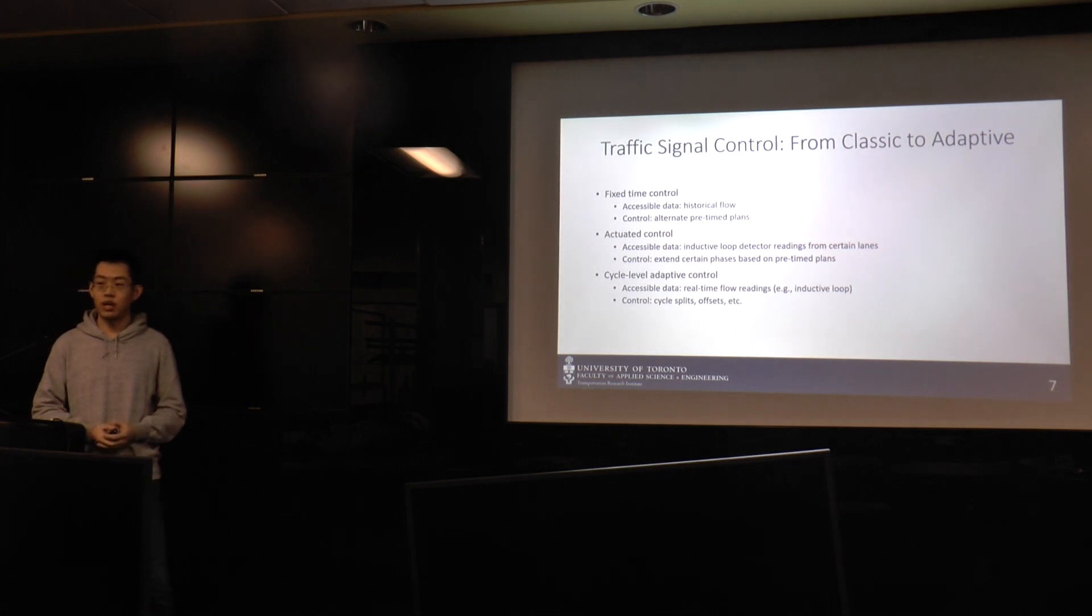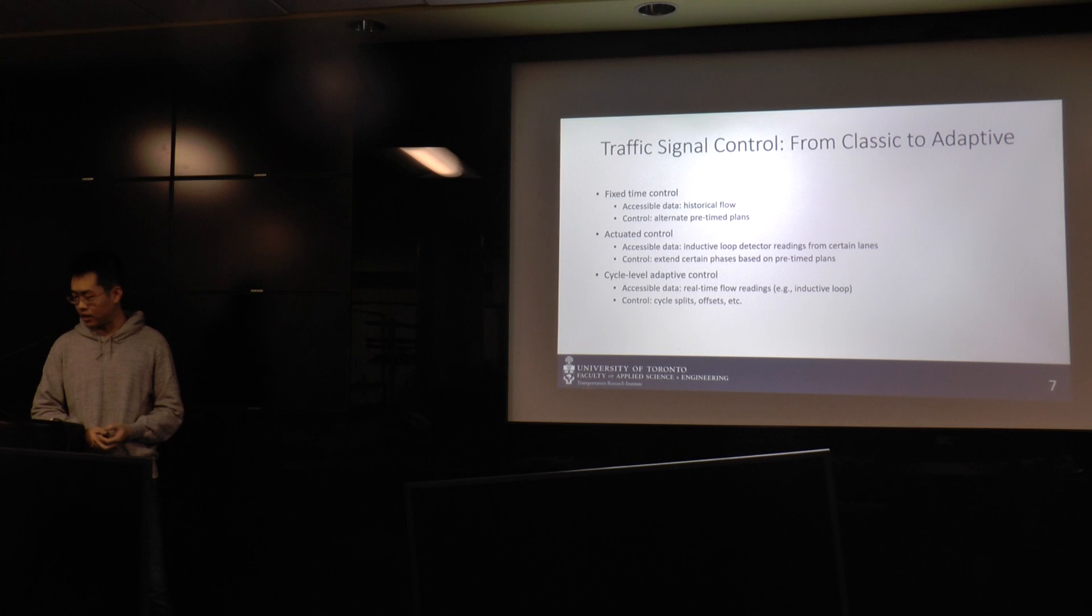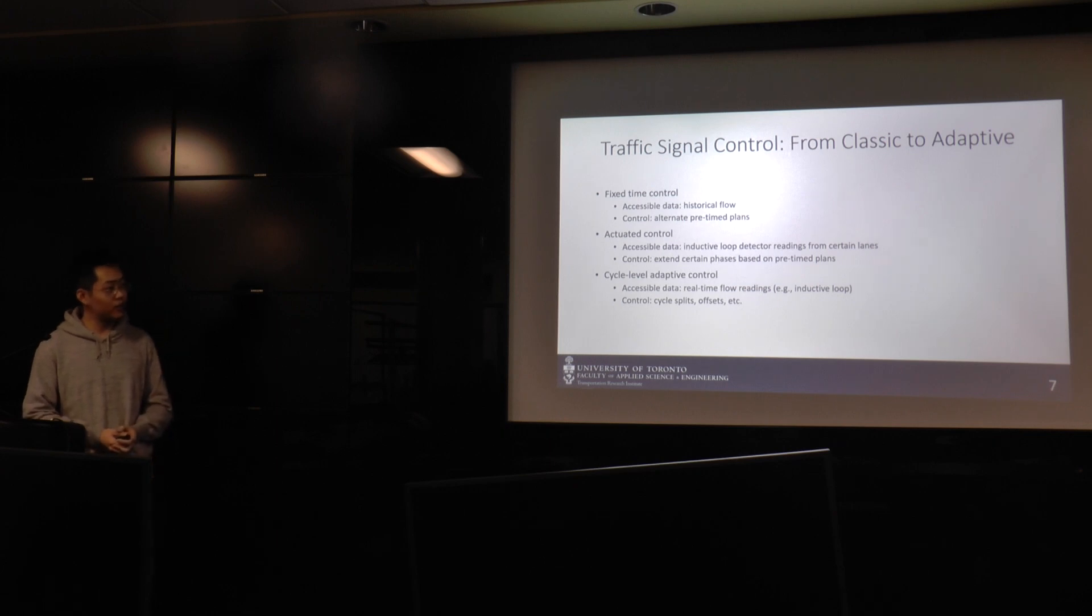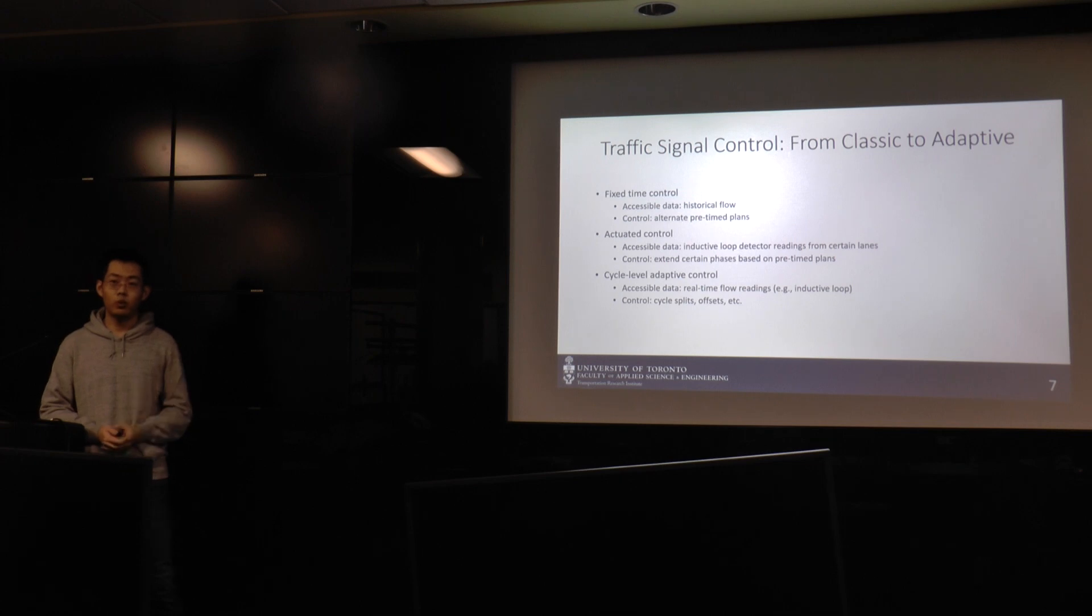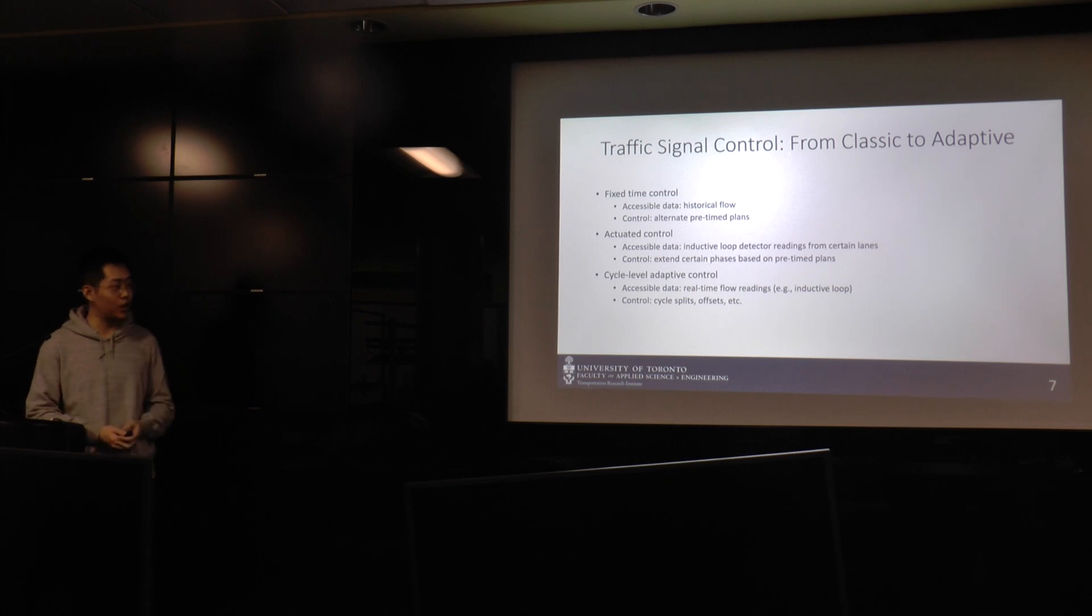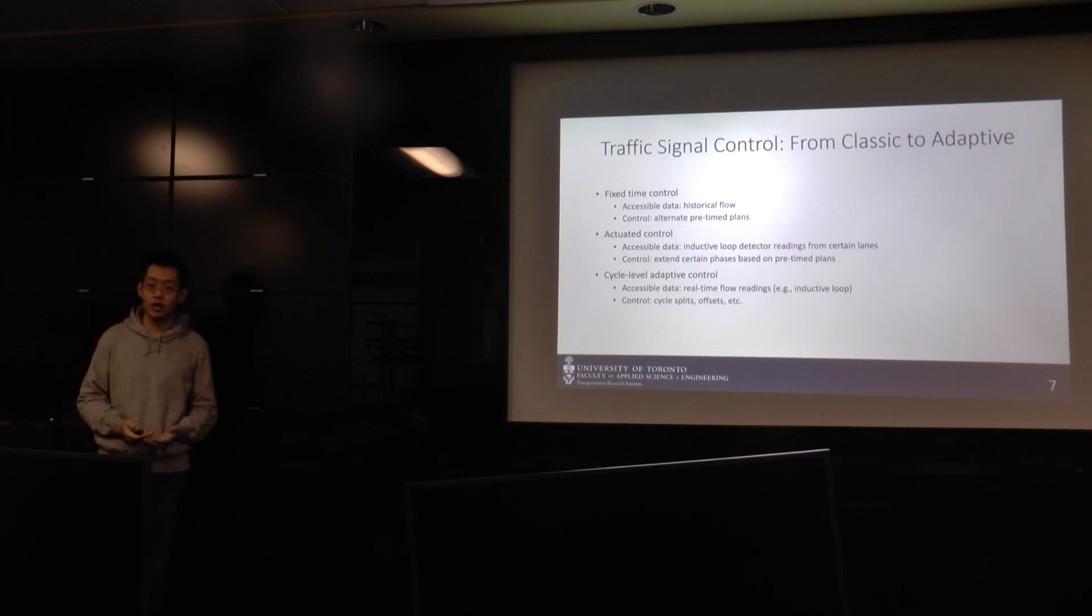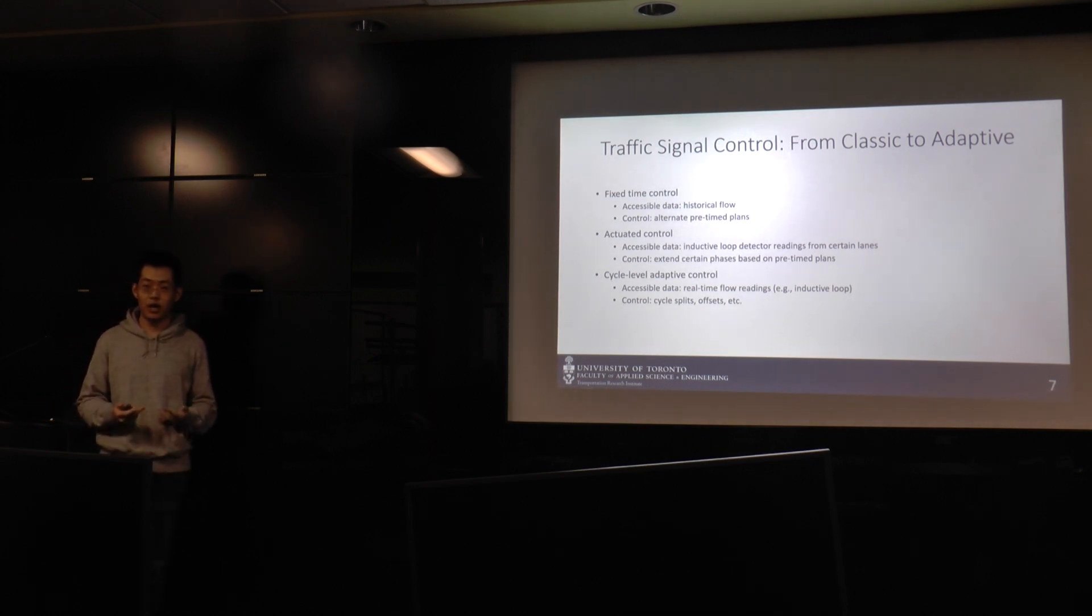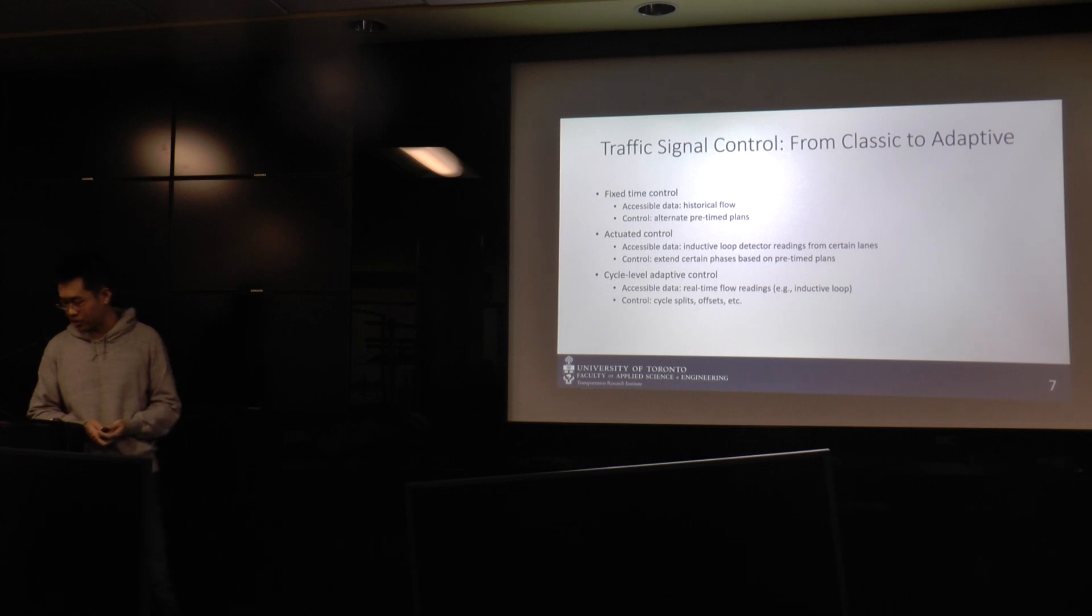And later in late 1960s or early 1970s, we have the cycle level adaptive control. Now we have more data. We have the real-time flow reading, for example, from weekday peak, 6 a.m. to 7 a.m. We know that the traffic flow from northbound of a specific intersection is high. So we can do the real-time optimization. We can calculate the cycle speed, calculate the offset of a specific corridor in the downtown area. We call that cycle level adaptive control. It means the cycle plan, the timing plan is reactive to your real-time traffic scenario, real-time traffic profile.